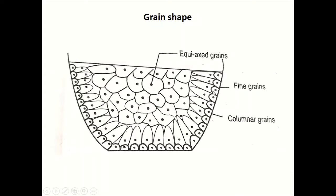These near-wall grains are fine grains, while the center grains are coarse. Depending on the type of grains formed, all these regions possess different properties. Equiaxed grains means the grain has the same dimensions along all three coordinate directions.